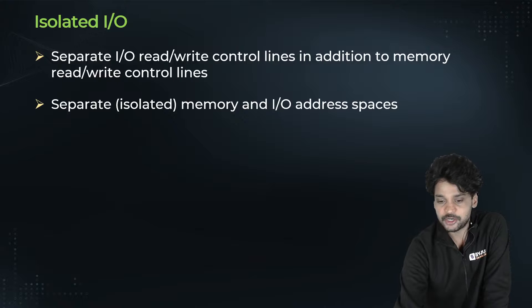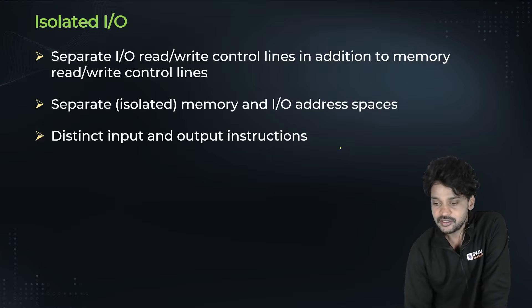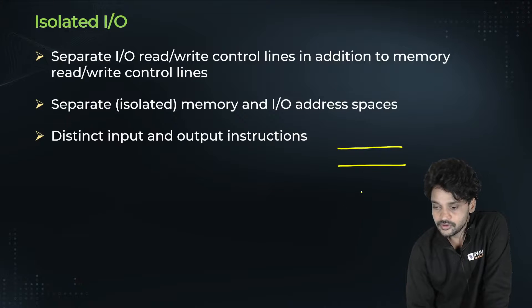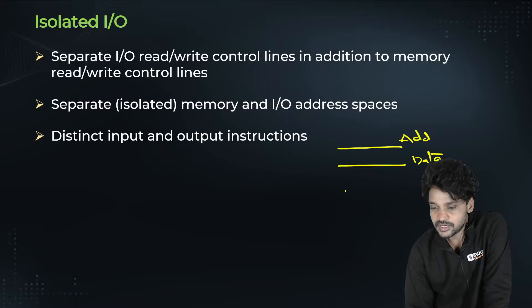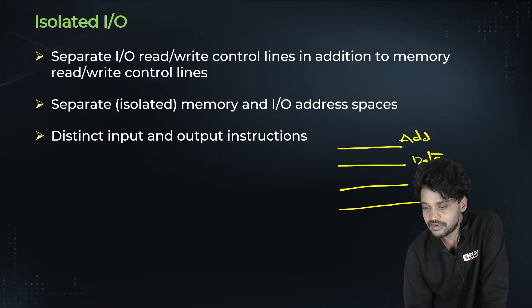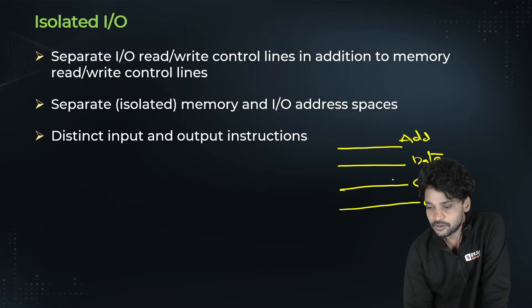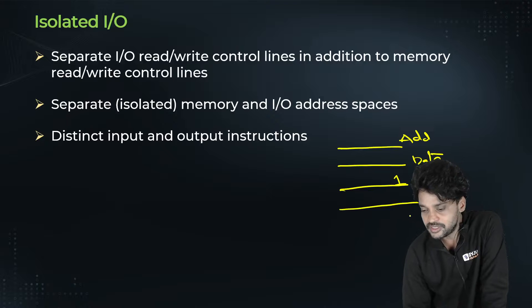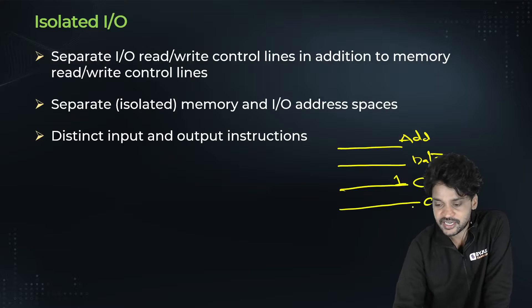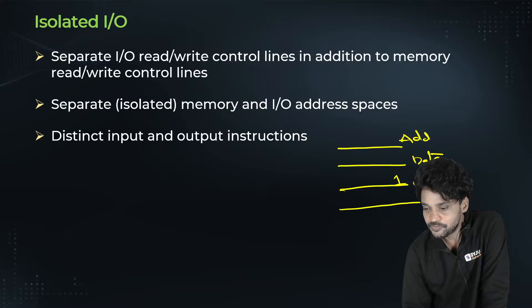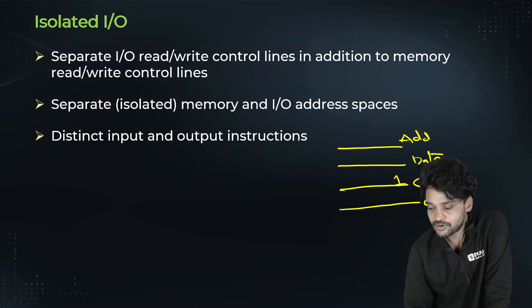In isolated IO: same address line, same data line, but there are two control lines. If control line one is active, the data transfer is initiated to memory. If control line two is active, the transfer is initiated to IO devices. So control line one corresponds to main memory transfer, and control line two corresponds to an IO transfer.